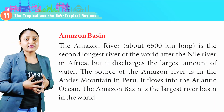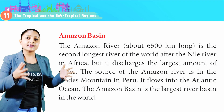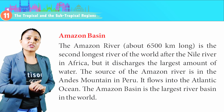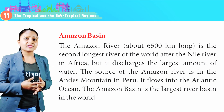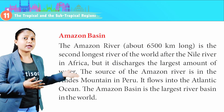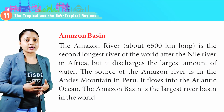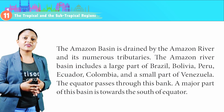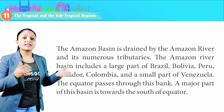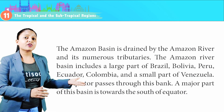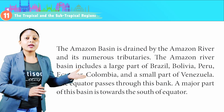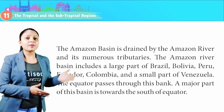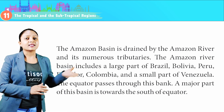Amazon Basin: The Amazon River, about 6,500 km long, is the second longest river in the world after the Nile River in Africa, but it discharges the largest amount of water. The source of the Amazon River is in the Andes mountains in Peru, and it flows into the Atlantic Ocean. The Amazon Basin is the largest river basin in the world, drained by the Amazon River and its numerous tributaries. It includes a large part of Brazil, Bolivia, Peru, Ecuador, Colombia and a small part of Venezuela. The equator passes through this basin, and a major part is towards the south of the equator.